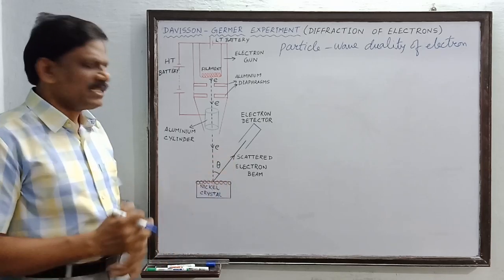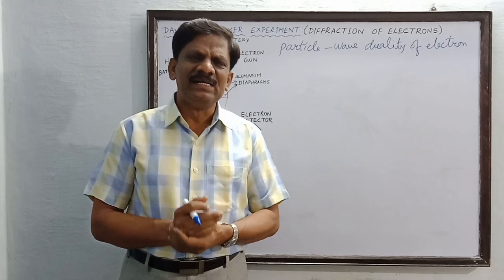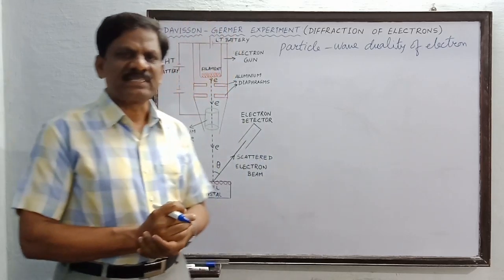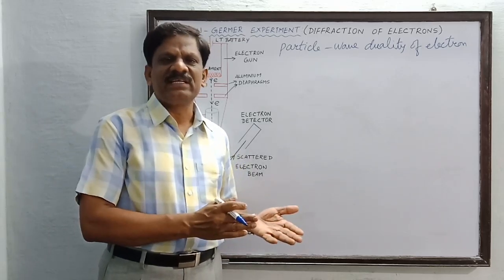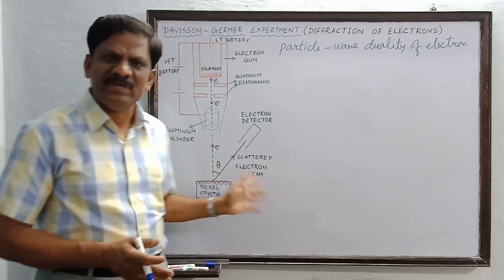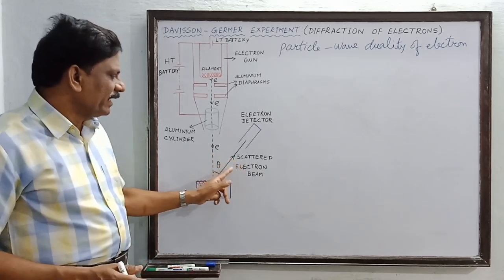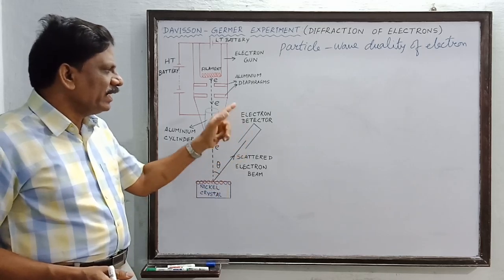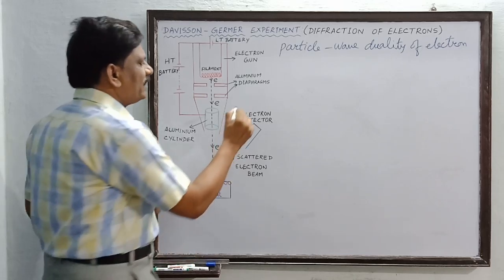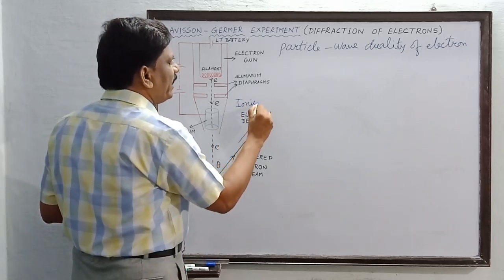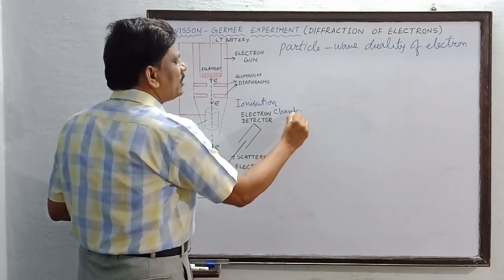In this experiment, the angle of scattering and the angle of diffraction are almost one and the same. So the scattered as well as the diffracted electrons — we can use either term — both refer to the same electrons in this experiment. After scattering, the electrons are allowed to enter inside an electron detector, which is an ionization chamber.